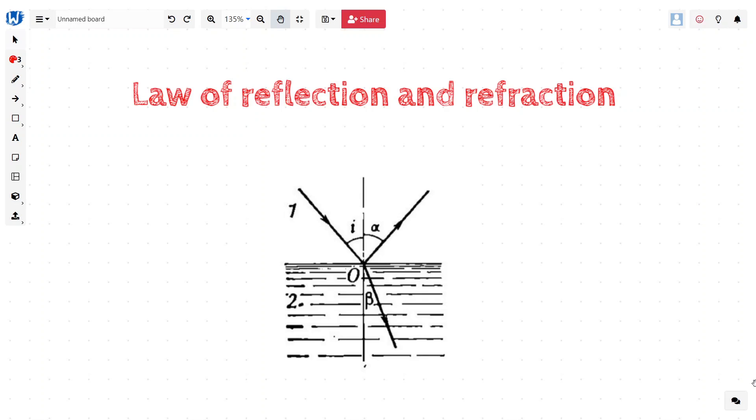If we are able to do that by simply observing few experiments, we will be able to formulate laws without worrying about the exact nature of light. The section of optics which deals in such laws is called geometrical optics.